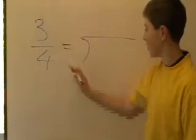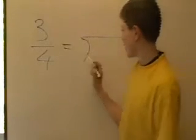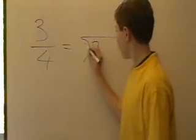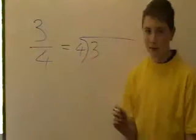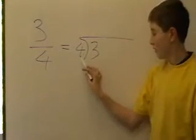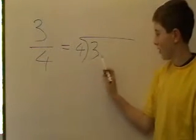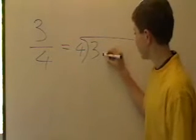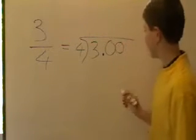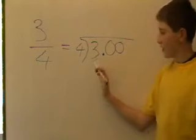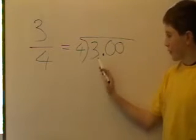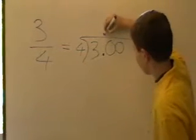In this fraction, 3 quarters is the same as saying 3 divided by 4. Now, since 4 doesn't go into 3, we add a decimal point and two zeros. The value of 3 doesn't change — it just stays 3. So now we'll do the sum.